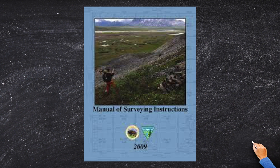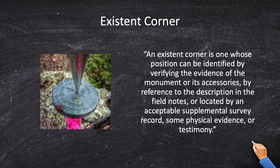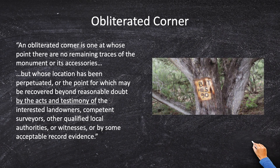An existent corner is a corner which is actually physically there, or it has monuments. If you have a corner monument or you have accessories of the corner, that corner is existing. Second, if the corner and all of the monuments are gone, but you've got some old-timer who walks up and says, 'I know where that corner is — I've seen it for 55 years, it's right here.'